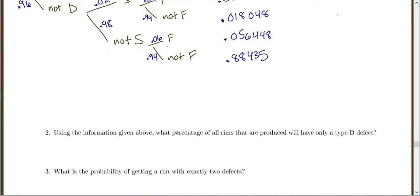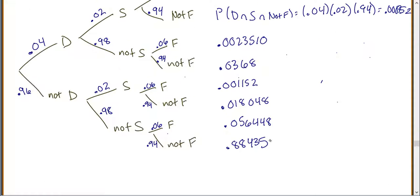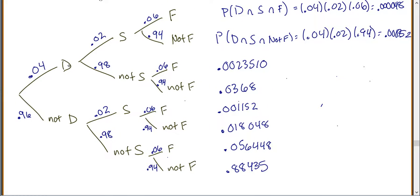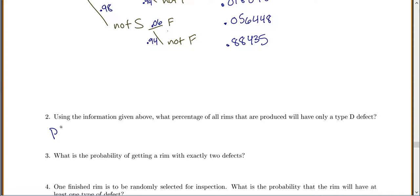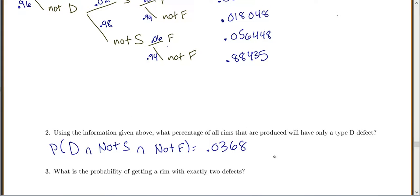Using the information given above, what percentage of all rims that are produced will have only a type D defect? We only want a D defect, so which branches can you go along that will have just a D? We can't have an S or an F, so we want not S and not F. If we went to not D, that doesn't have a type D defect. So the only branch that has just the D is D and not S and not F, which is 0.0368.